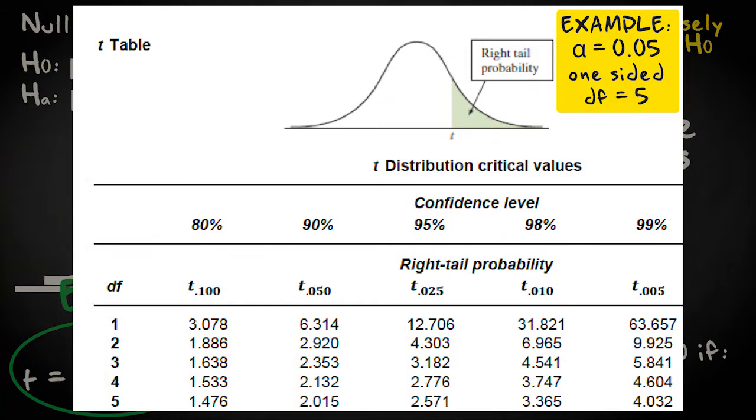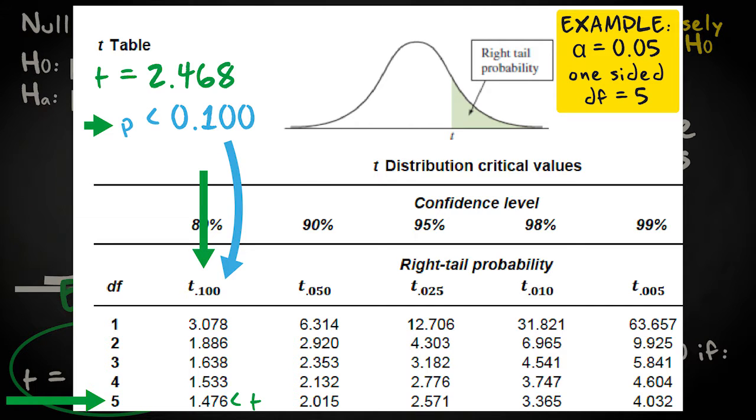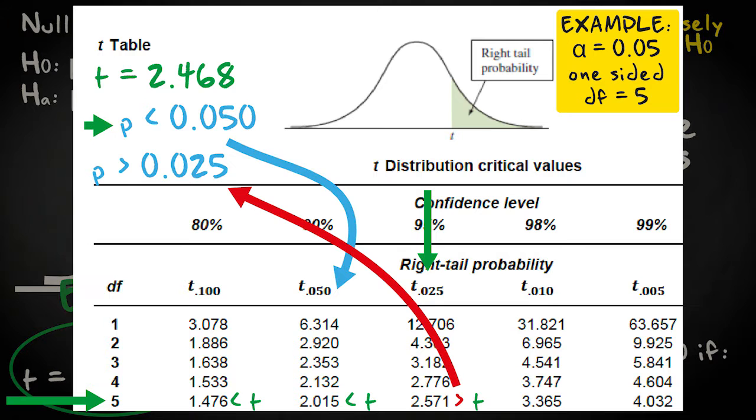If I look at the p-value, I look in the row with the appropriate number of degrees of freedom, and starting at the left column, I check whether my t-value exceeds the listed value. If it does, I know my p-value is smaller than the p-value listed above that column. Once I encounter a value that's larger than my t-value, I know my p-value is larger than the p-value listed above the column, but smaller than the p-value in the previous column.